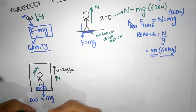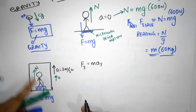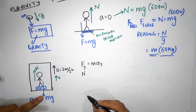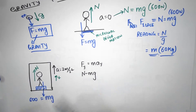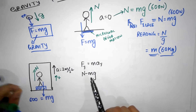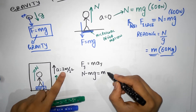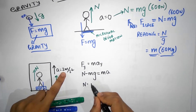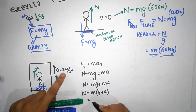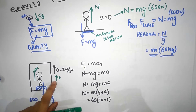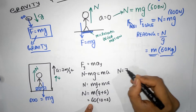Let's choose upwards as positive and apply Newton's second law. Net force in the y direction must equal mass times acceleration in the y direction. N is positive and mg is negative, so: N minus mg equals ma. Therefore, the normal force is mg plus ma, which becomes m times (g plus a). That will be 60 times (10 plus 2) — that's 60 times 12. So the normal force in this example will be 720 Newtons, not 600.